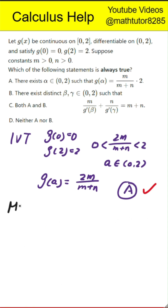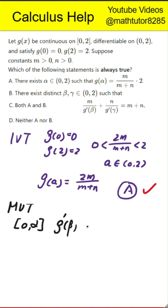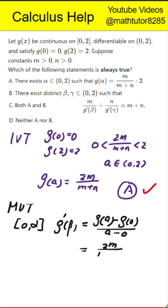Next step, apply the mean value theorem. On the interval from 0 to alpha, there exists a point beta such that g prime of beta equals g of alpha minus g of 0, all divided by alpha. That simplifies to 2m divided by m plus n, then divided by alpha.